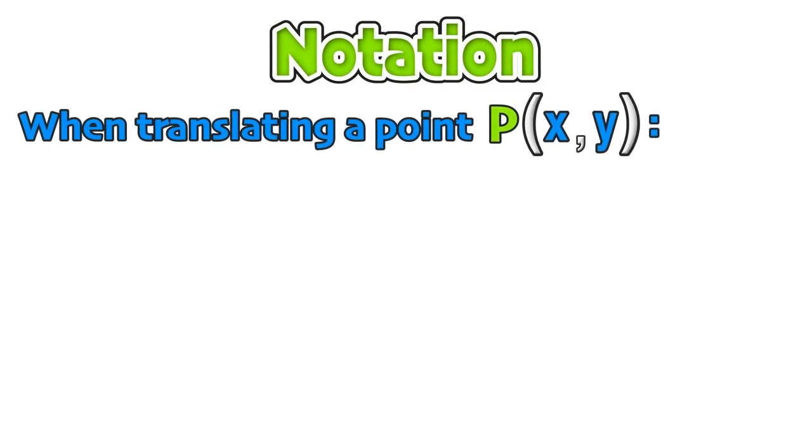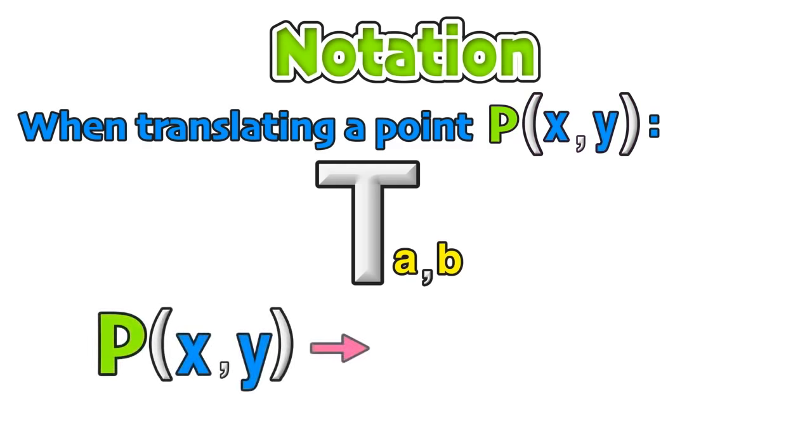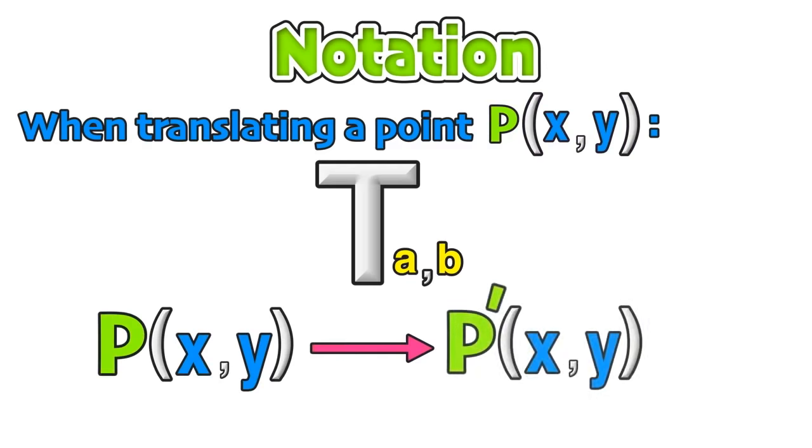When translating a point P with coordinates x, y, we can use the capital T notation. Our point P with coordinates x, y is translated to the new point P prime.